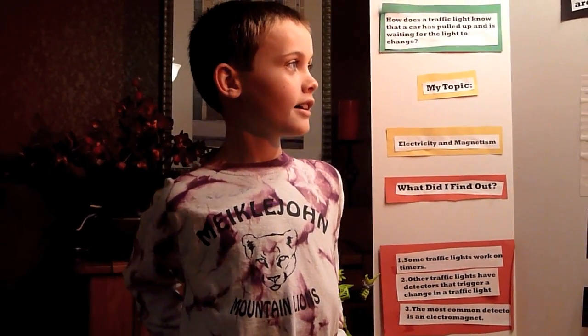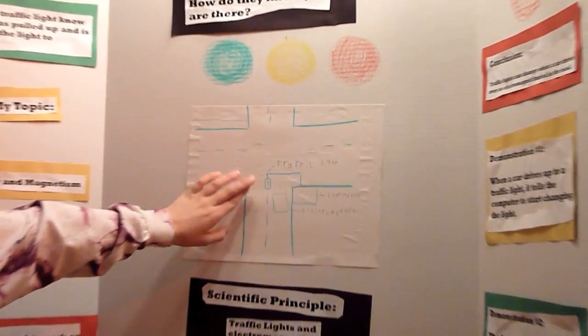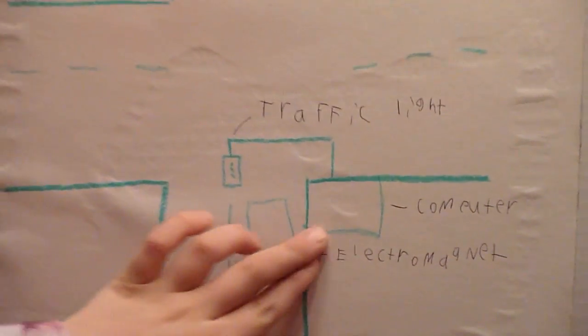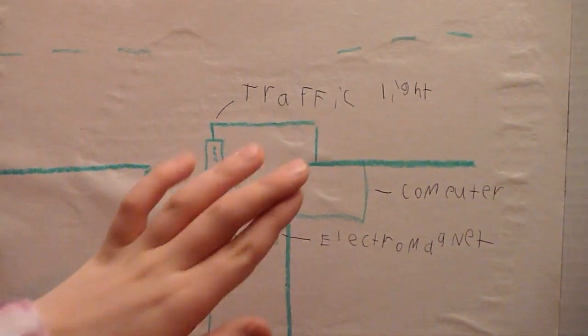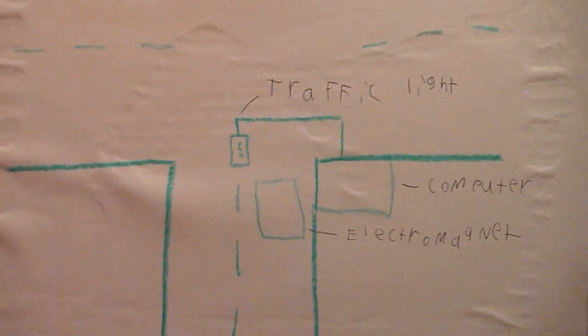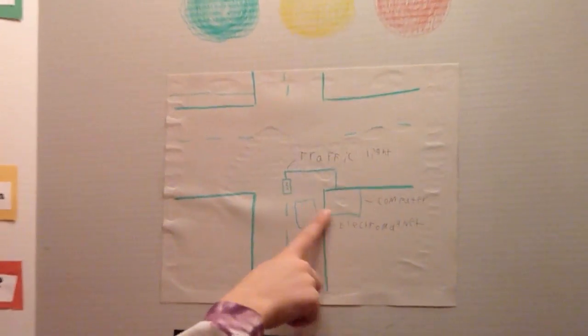Can you show us your diagram of how a traffic light works? This is a traffic light. This is the computer in the road. This is an electromagnet. The car pulls up and the electromagnet feels it, which tells the computer. The computer tells the traffic light to change.